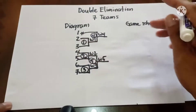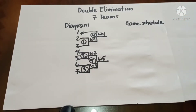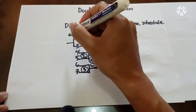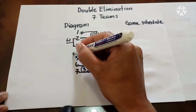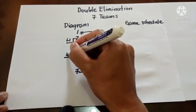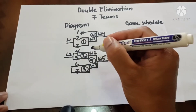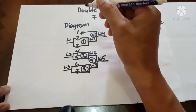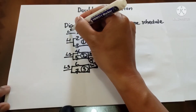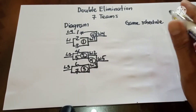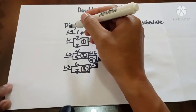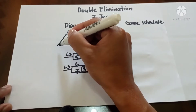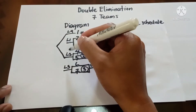Now let's proceed to the loser's bracket. Starting with Loser 1 from Game 1, Loser 2 from Game 2, Loser 3 from Game 3, and Loser 4 from Game 4. Loser 4 plays against Loser 2, and Loser 1 plays against Loser 3.